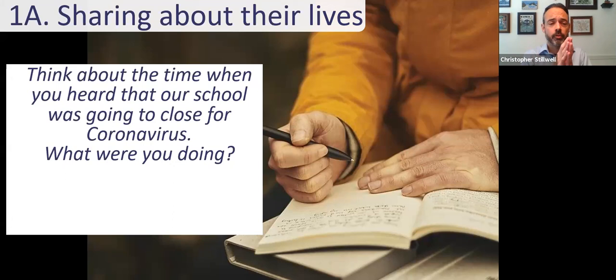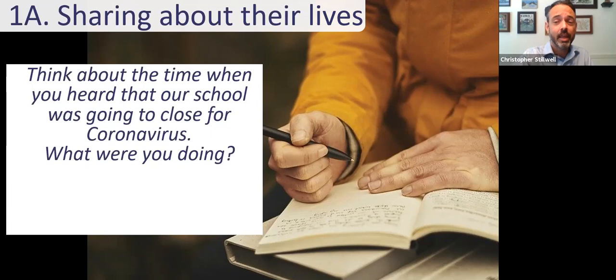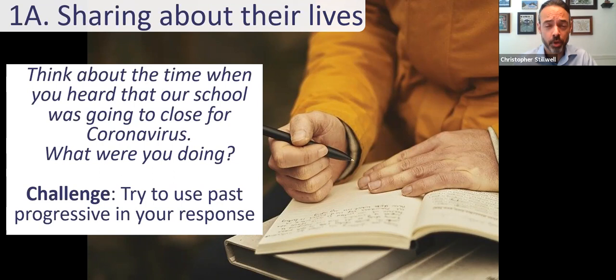I want to share an activity that could be used with these kinds of prompts. We might start with a question interesting to students — in this case: think about the time when you heard that our school was going to close for coronavirus. What were you doing? This is a question all students should be able to remember and share from their experiences. We want to focus on those experiences first and think about the meaning. Some students will be ready for a grammar challenge right away — in that case, try to use past progressive in your response to talk about what you were doing at the time. Students can write for two or three minutes and then we respond to what they wrote to develop grammar skills.